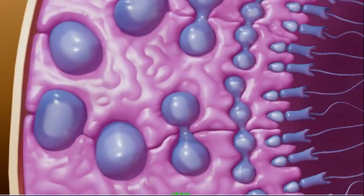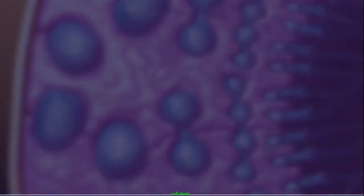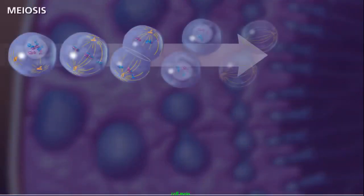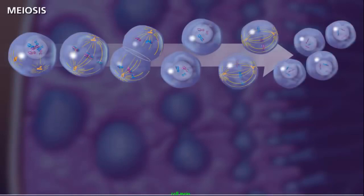Meiosis occurs in special cells called germ cells within the gonads of males and females. For the successful reduction in the number of chromosomes to occur in the new haploid daughter cells, two rounds of divisions are necessary.